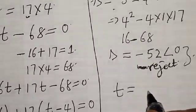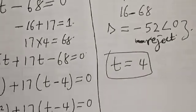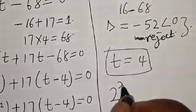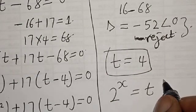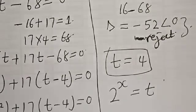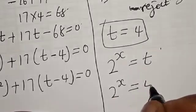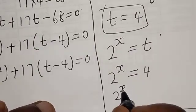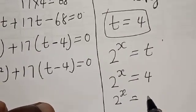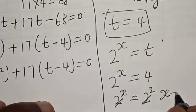The only valid solution is t equals 4. Remember we said 2 raised to power x equals t, and we know t equals 4. So 2 raised to power x equals 4, which is the same as 2 raised to power x equals 2 squared. Since they have the same base, the bases cancel and x equals 2.